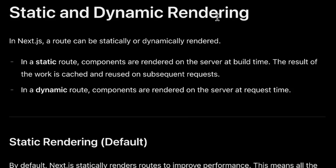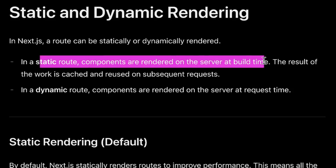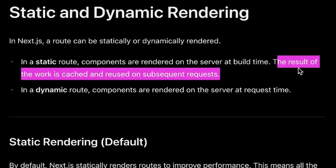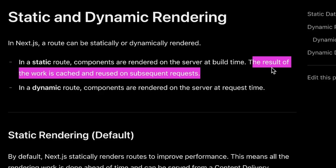In Next.js, you can render things statically and dynamically. In a static route, components are rendered on the server at build time. The result of this work can be cached and then served to the user on subsequent requests. So when you compile and build your application, you can render these static routes or static route segments at build time. Since they are not dynamically changing data or routes, you can reuse this rendered data over and over again and leave it on a cache to serve to your clients when they need it. Static routes have non-changing data and are rendered on the server at build time.